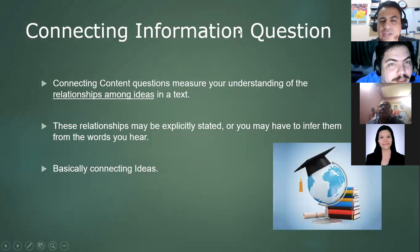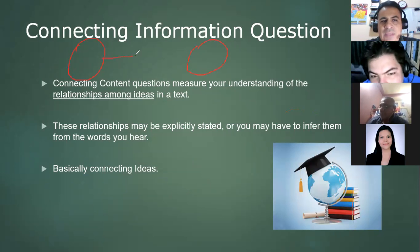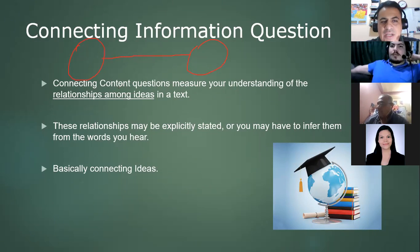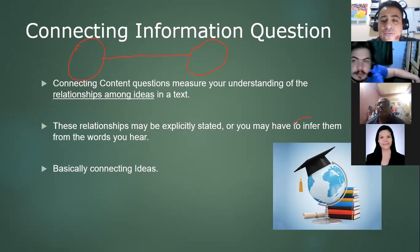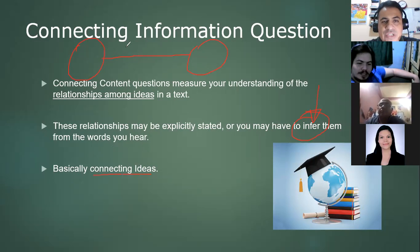Number three is connecting information questions. These connect ideas — I have one idea here and one idea here, and something connects them. What connects those ideas? Connecting questions measure your understanding of the relationship among ideas. These relationships may be explicitly stated or you may have to infer them. Remember 'infer' from the reading section? That means to use logic to make a reasoned guess.